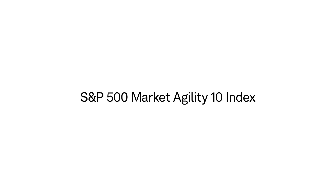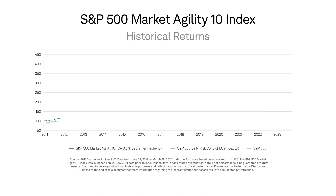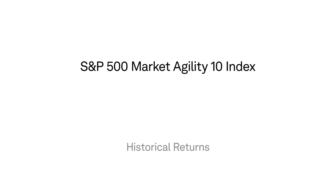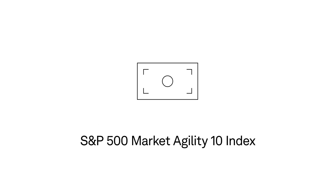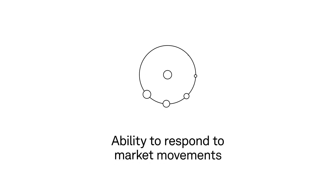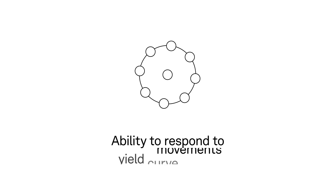In terms of performance, back-tested data shows that the S&P 500 Market Agility 10 Index would have demonstrated higher risk-adjusted performance versus the benchmark since June 2011. The potential benefits of the S&P 500 Market Agility 10 Index versus a traditional equity index include diversification thanks to its multi-asset construction and its ability to respond to market movements and yield curve trends, which has historically led to a more stable volatility experience.